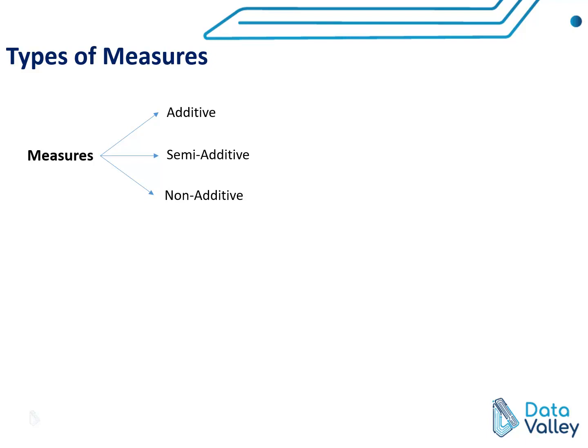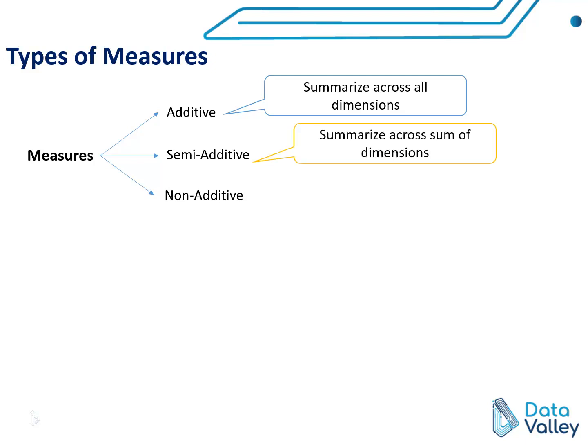Regarding measures, we have three types: additive measures, semi-additive measures, and non-additive measures. Additive measures are those we can summarize or aggregate across all available dimensions in the fact table. Semi-additive measures are those we can summarize or aggregate across only some of the available dimensions.